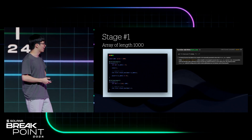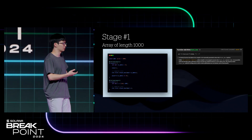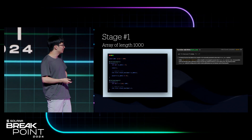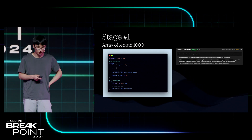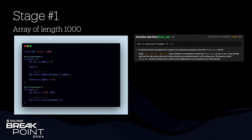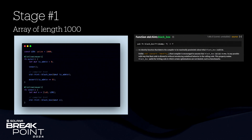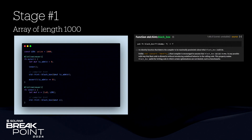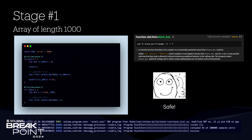In our example, we have an outer function that allocates a variable called isAdmin. Then we call an inner function, and the inner function does a variety of different stack shenanigans. The question is, what happens when you try to run it, and critically, does isAdmin change? So here we're allocating 1,000 bytes. You can run this, and as expected, the variable on the stack does not change at all.